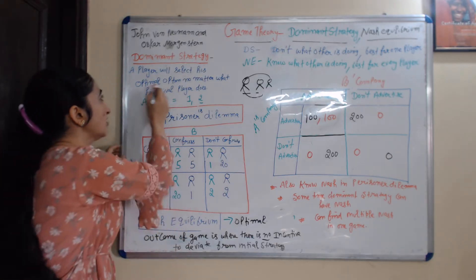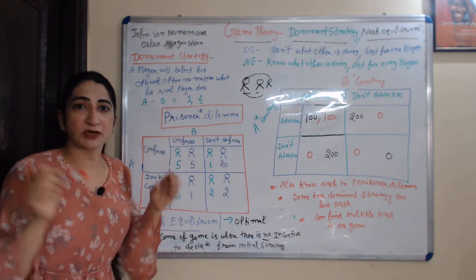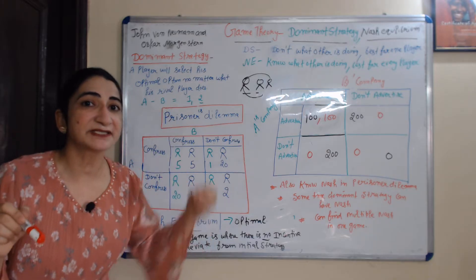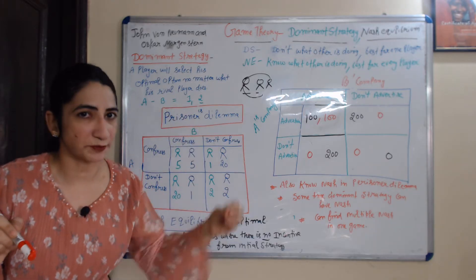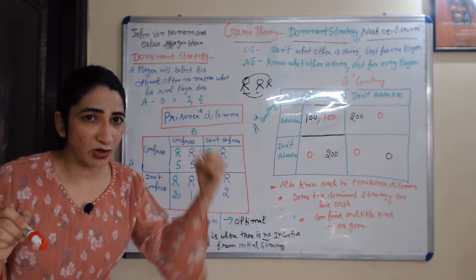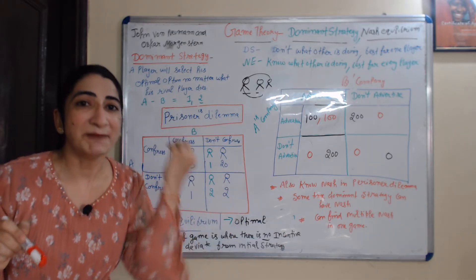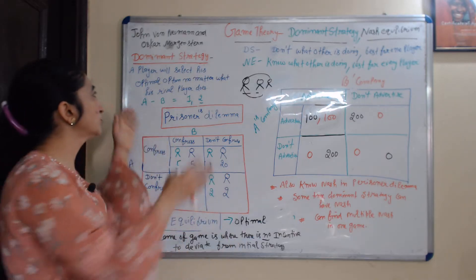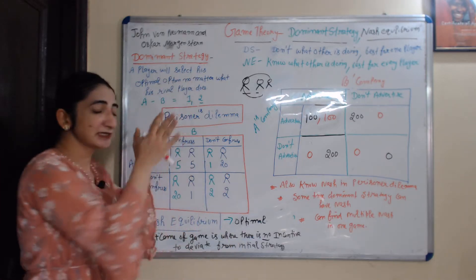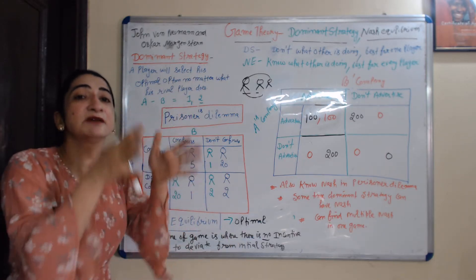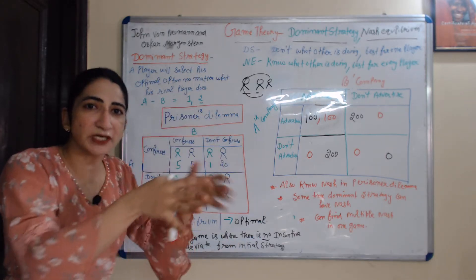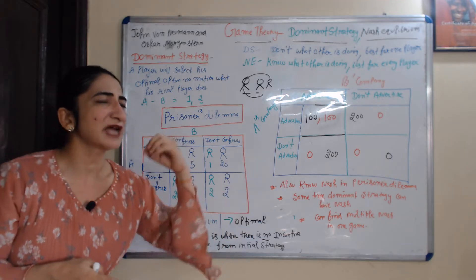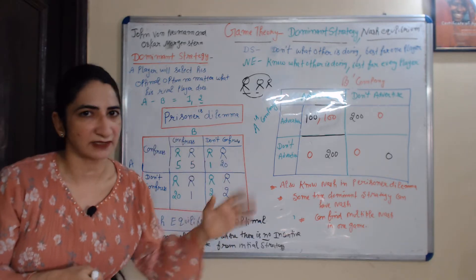What does mean by optimal option? Optimal option means best possible option. In dominant strategy, a player will select his best possible option no matter what his rival player does.